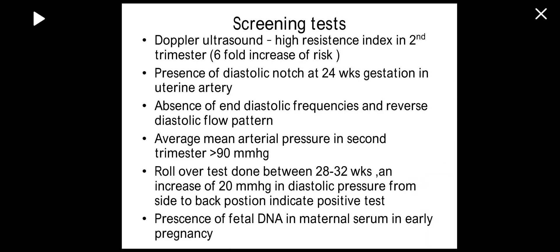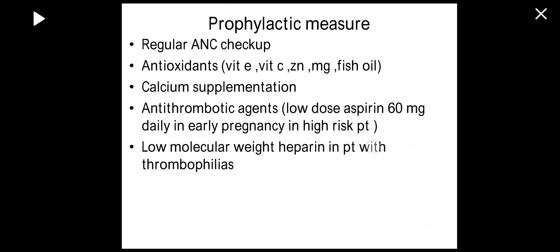Other predictive markers include endoglin and sFlt-1, which are costly but effective, and pregnancy-associated plasma protein A (PAPP-A). Prophylactic measures: high-risk patients should have regular and more frequent antenatal checkups. High-dose calcium supplementation up to 2 grams per day is effective in prevention. Antioxidants (vitamin C, E, zinc, magnesium, fish oil), antithrombotic agents, and low-dose aspirin 60 mg daily from the first trimester (per the CLASP study) are recommended. Low molecular weight heparin may be given in patients with thrombophilias.